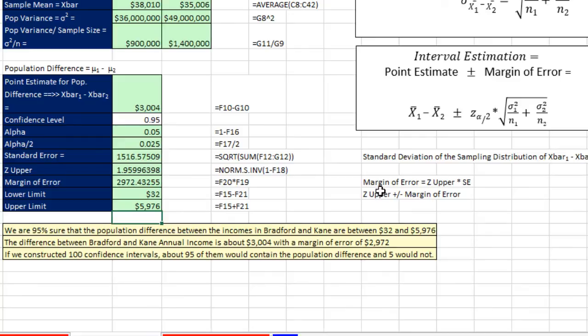So just as we have done many times so far in the class, we write our conclusion. We are 95% sure that the population difference between the incomes in Bradford and Kane are between $32 and $5,976. Now something interesting to note here, our next example, we're going to use the same example, but we're going to do hypothesis testing. If we calculate a confidence interval, we actually can do a type of hypothesis testing here. And we know that this interval does not contain zero. So then we would conclude that there is a difference.